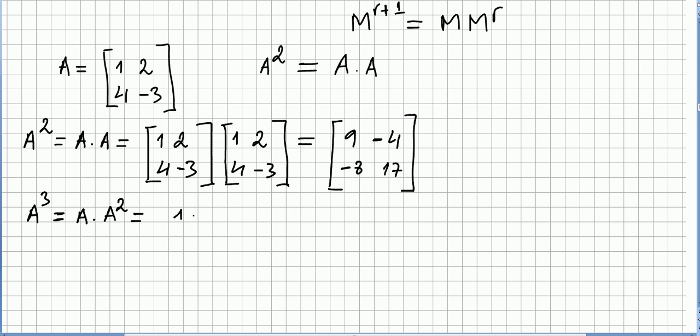So we use the matrix 1, 2, 4, minus 3, and we can already use A squared, that's 9, minus 4, minus 8, and 17.